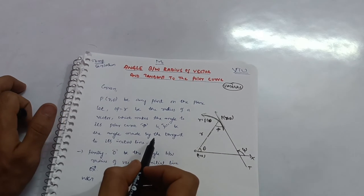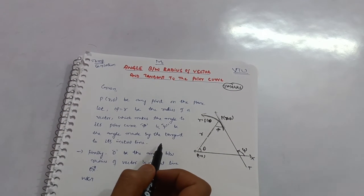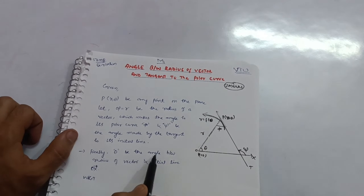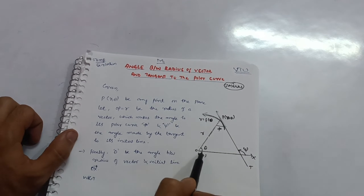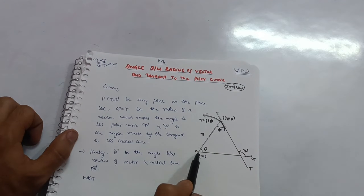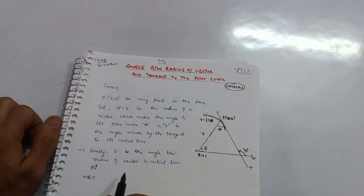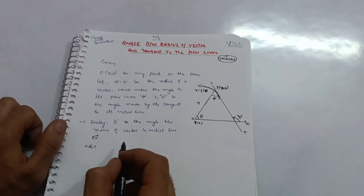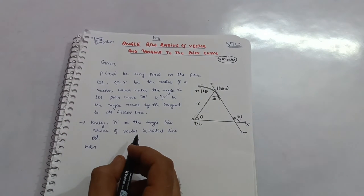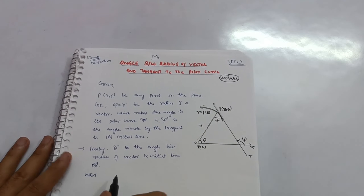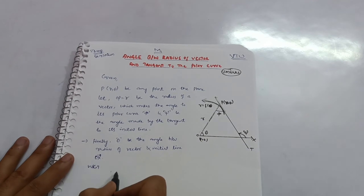These are the key definitions you need to write in the examination. Let θ be the angle between the radius vector and the initial line OX. Now we have to prove the main result for the angle between the radius vector and the tangent to the polar curve.